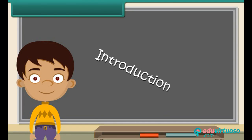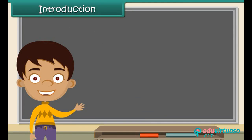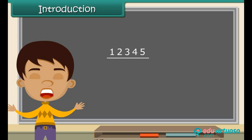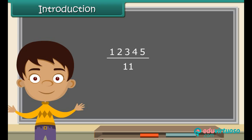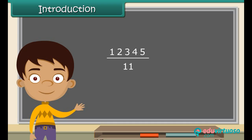Your friend challenges you to find if the number twelve thousand three hundred forty five is divisible by eleven in less than thirty seconds. Is it possible to divide twelve thousand three hundred forty five by eleven and check? No, that will take longer than thirty seconds. Do you secretly wonder if there is another way to solve the problem?